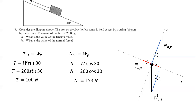Notice that the normal, which is a support force, is less than the weight of the box. So as that angle gets more and more steep, the normal force — the support force — is less and less. The ramp is supporting the box less and less. Makes sense.